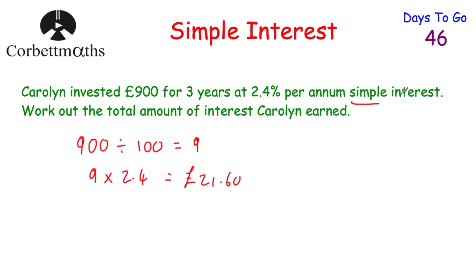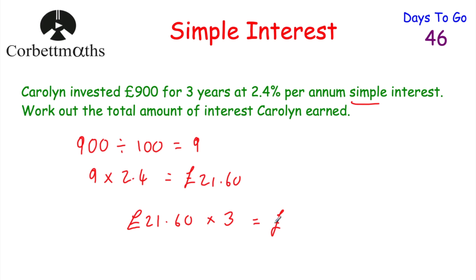So with this being simple interest, this account earns £21.60 interest every single year. The money is invested for three years, so because it earns £21.60 per annum — per annum means per year — we do £21.60 multiplied by three, because it's invested for three years. That gives us an answer of £64.80. Because the question asks how much interest she earned, the answer is £64.80. Well done if you got that.